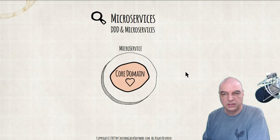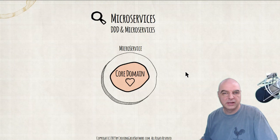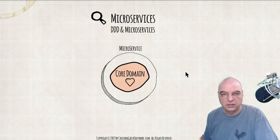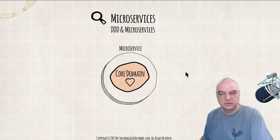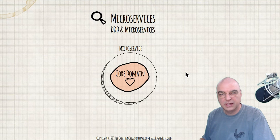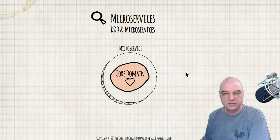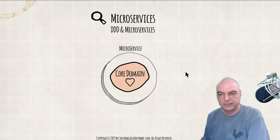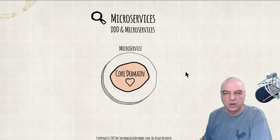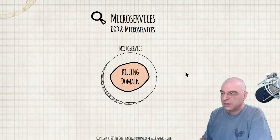Maintaining the domain inside the microservice using the ports and adapter style architecture — which is one of the styles you can use — will really help you not just from a conceptual design perspective but also from the implementation point of view. Microservices will force this physical boundary where you cannot leak information outside of a service, because it's physically isolated and runs in its own operating process.